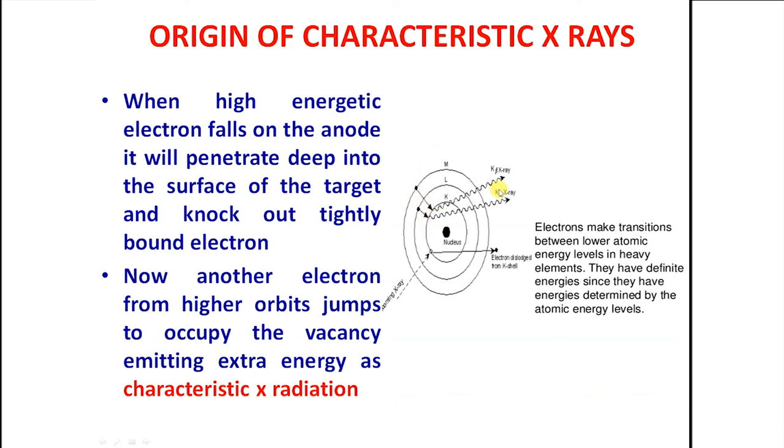When the electron from higher levels jump into K shell, that results in K characteristic radiations. When the electrons jump into L shell, that results in L characteristic radiations - K alpha, K beta, K gamma, L alpha, L beta, L gamma, etcetera.